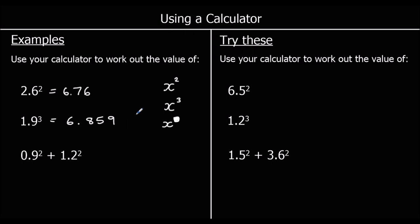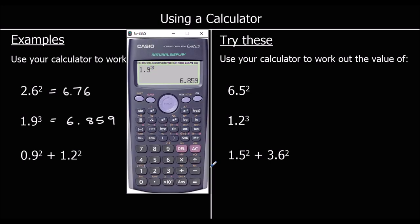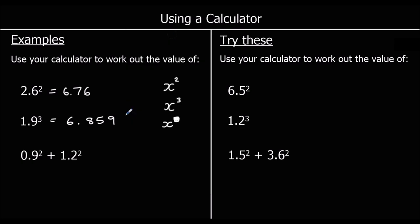For the next one, we've got 0.9 squared plus 1.2 squared. So 0.9 squared, then the plus button, 1.2 squared, press equals — we've got 9 over 4, or 2.25.